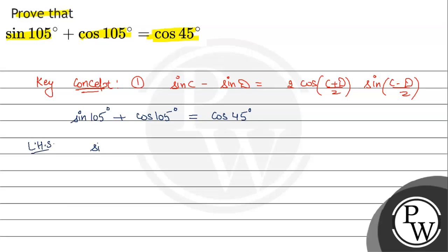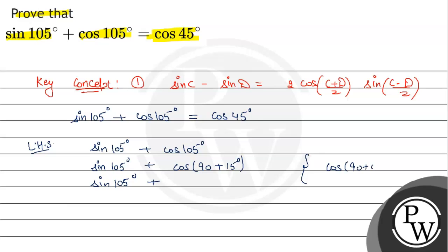Solving the left hand side: sin 105 degree plus cos 105 degree. Cos 105 degree can be written as cos (90 plus 15) degree. We know that cos (90 plus theta) is equal to minus sin theta. So this becomes sin 105 degree minus sin 15 degree.